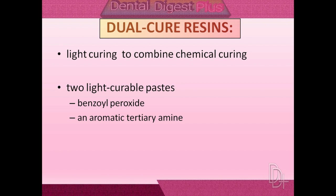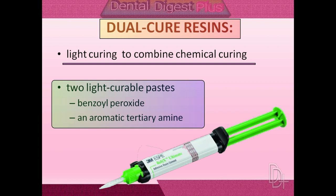One way to overcome limits on curing depth and other problems associated with light curing is to combine chemical curing and visible light curing components in the same resin — these are called dual cure resins. Dual cure resins consist of a two-paste system: one paste contains benzoyl peroxide and the other contains an aromatic tertiary amine. When these two pastes are mixed and exposed to light, light curing is promoted by the amine and camphorquinone combination, while chemical curing is promoted by the amine and benzoyl peroxide interaction. Dual cure materials are intended for situations that do not allow sufficient light penetration, for example, cementation of bulky ceramic inlays.